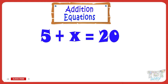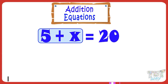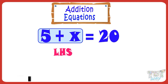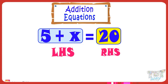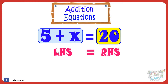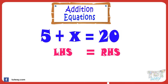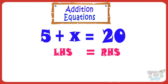So we have to find out the value of X. Here, 5 plus X is LHS — left-hand side of the equation. 20 is RHS — right-hand side of the equation. In any equation, the value of LHS must be equal to RHS. That is, 5 plus X must be equal to 20.